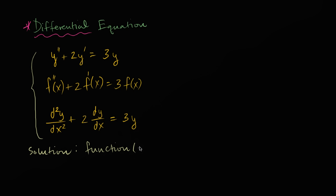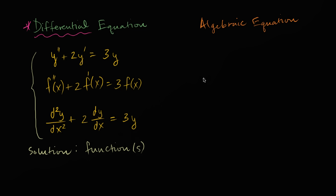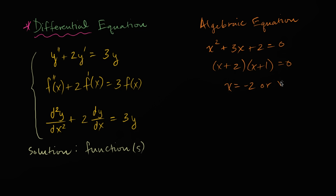It's important to contrast this relative to a traditional equation. Let me write this as an algebraic equation that you're familiar with. An algebraic equation might look something like a simple quadratic: x² + 3x + 2 = 0. The solutions to this algebraic equation are going to be numbers or a set of numbers. We can factor this as (x + 2)(x + 1) = 0, so x could be negative two or x could be negative one. The solutions here are numbers or a set of values that satisfy the equation. With differential equations, it's a relationship between a function and its derivatives, so the solution is going to be a function or a set of functions.